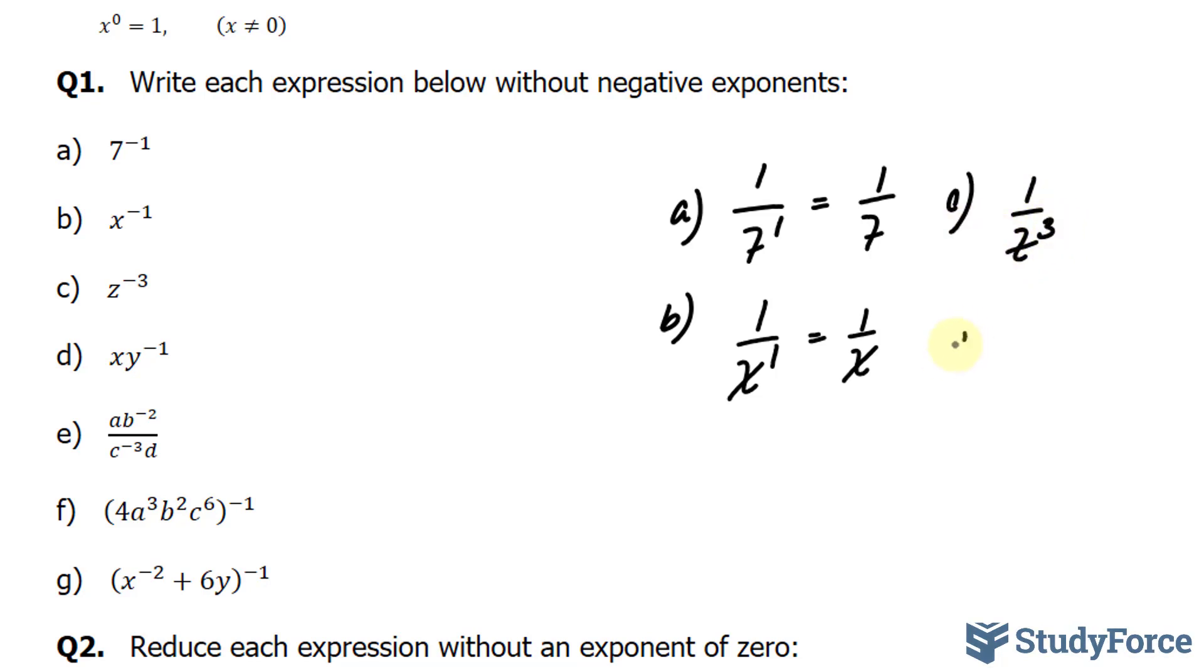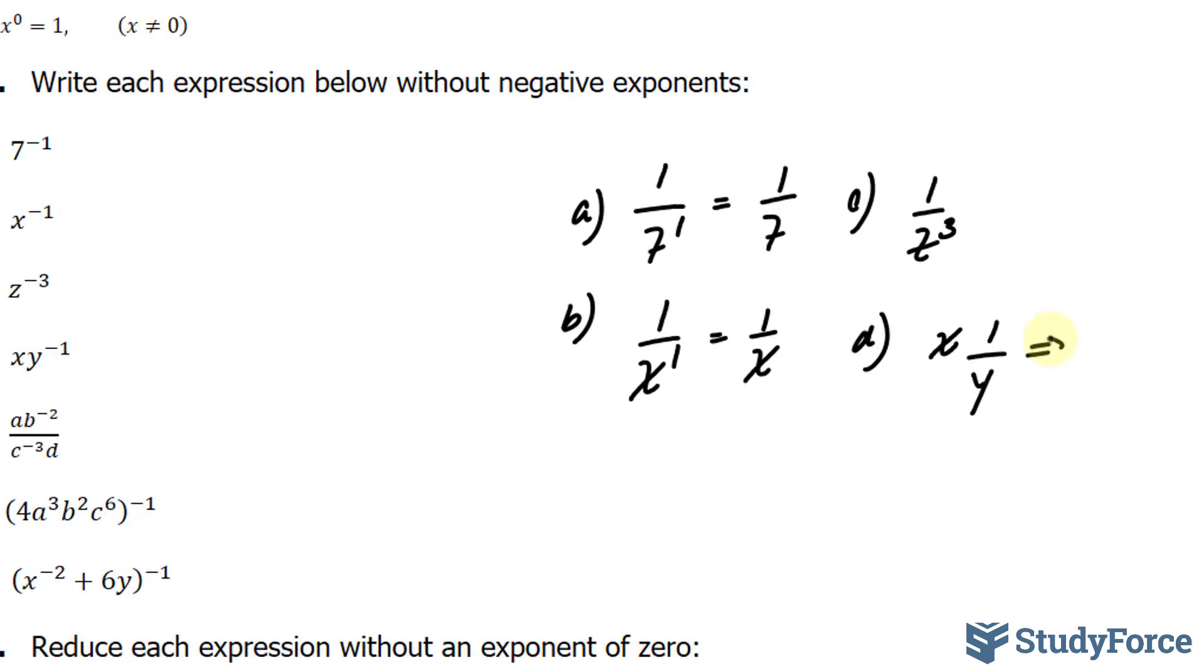In question D, the negative power is only associated with this y. So this factor x is left alone, and y becomes 1 over y to the power of 1. And together, when you multiply these, you end up with x over y.